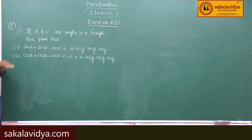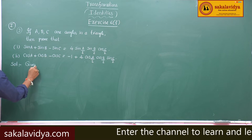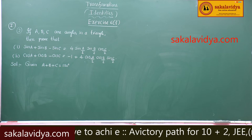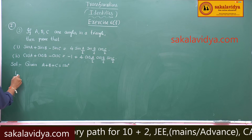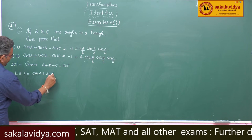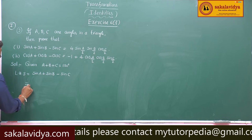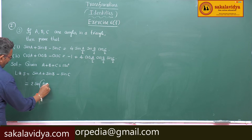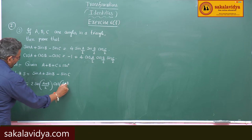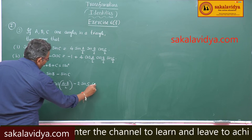First let us consider the first problem. Given A plus B plus C equals 180 degrees — this condition is important. Left hand side: sin A plus sin B minus sin C. We know that sin A plus sin B equals 2 sin((A+B)/2) cos((A-B)/2). And sin C we can write as minus 2 sin(C/2) cos(C/2).